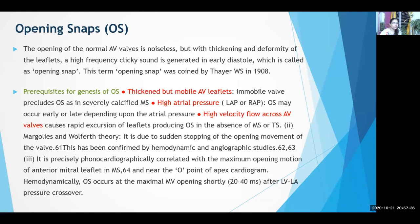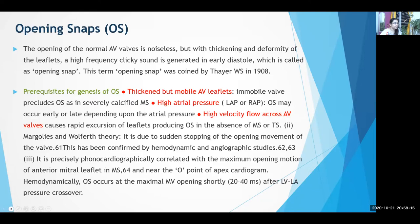Another theory is that the opening snap occurs due to sudden stopping of the opening movement of the valve, as seen on echocardiography — the corresponding finding is diastolic doming of the mitral valve during echo. Mobile leaflets and high atrial pressure are required for the production of the opening snap. It is a diastolic event, so it comes after the second heart sound. Common causes are mitral stenosis and tricuspid stenosis. Other non-stenotic causes produce functional stenosis with normal valves but high flow.